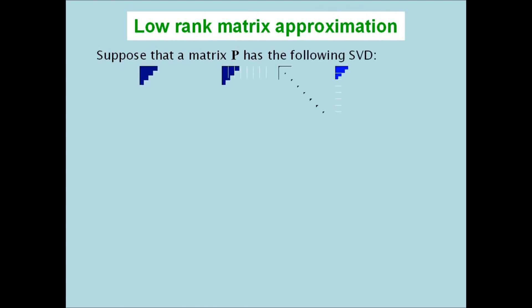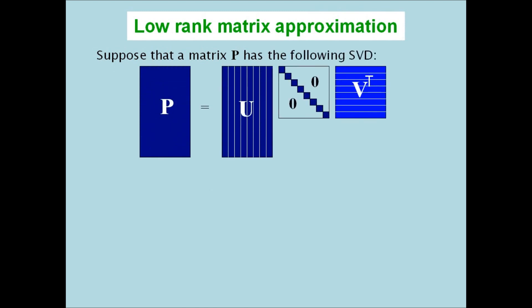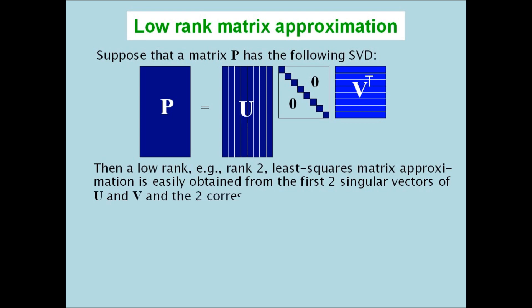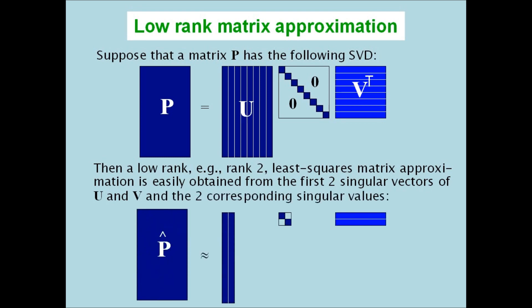Suppose that a matrix P has the following SVD. Then a low rank, for example rank 2, least squares matrix approximation is easily obtained from the first two singular vectors of U and V and the two corresponding singular values.